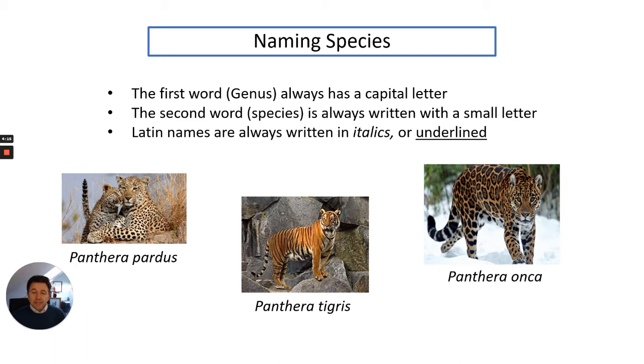The first word, genus, always has a capital letter, and the second word, species, is always written with a small letter or lowercase letter. Latin names are always written in italics, but obviously you can't write in italics, so they can be underlined. Here we've got three different types of Panthera, and you can see the capital letter for genus and lowercase for the species, and that is in italics.